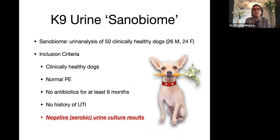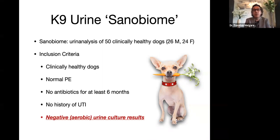In order to do that, we wanted to do a prospective study. We called for students, staff, and faculty at Western University and were able to collect samples from 50 clinically healthy dogs — 26 males and 24 females. All of them were spayed or neutered. The criteria required a normal clinical and physical examination. One of the inclusion criteria was no antibiotics for the last six months and no history of UTI.